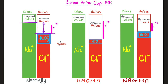We talked about NAGMA in the last video. What happened in NAGMA is that bicarbonate dropped — you lost a negative. In order to maintain electroneutrality, you should gain a negative. So you gained chloride. You lost bicarbonate, you gained chloride — they balance each other out, anion for anion, negative for negative. What happened to the anion gap? No change. The anion gap from this line to this line is the same as before — it did not really change.